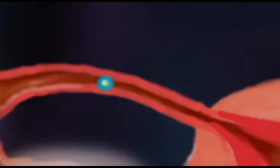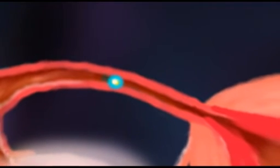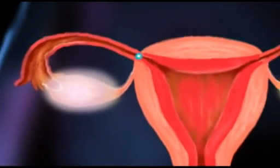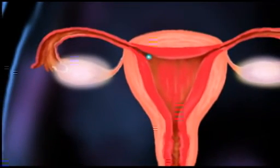Within hours of fertilization, the zygote begins to develop and travels along the fallopian tube, reaching the uterus in approximately three days. When the zygote reaches the uterus and implants in the endometrium, the female is said to be pregnant.